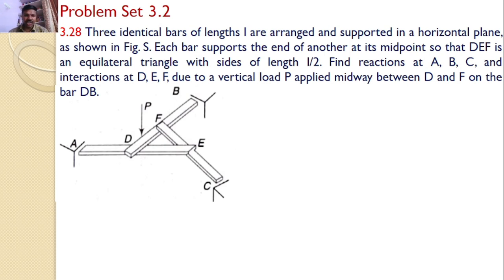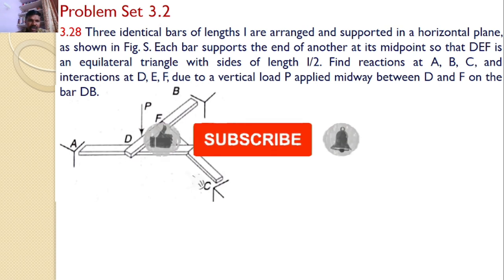There are three bars: A-E, D-B, and C-F arranged like this. Our interest is to find the reactions at the supports A, B, C and also at the midpoints D, E, F. So for that, we will analyze each bar individually.